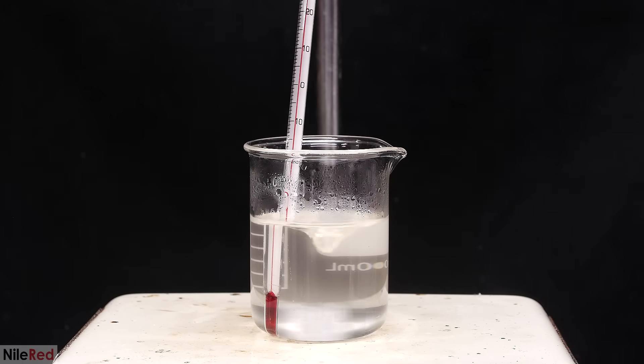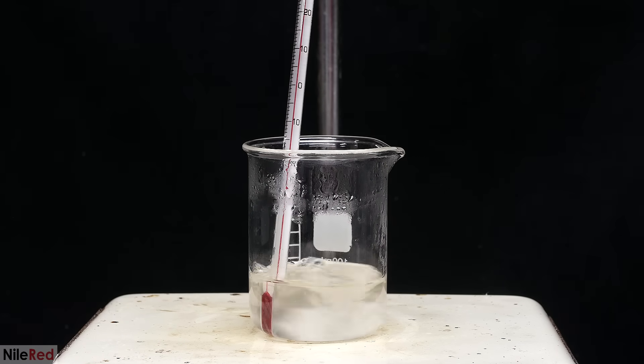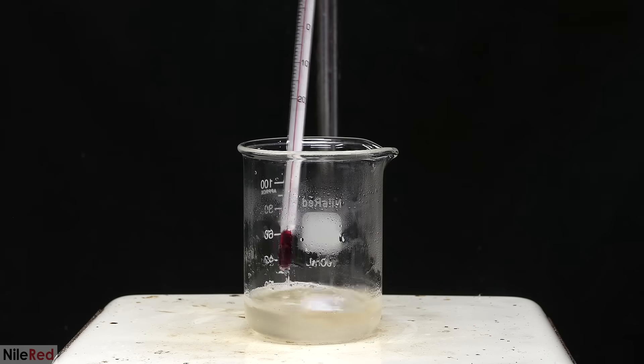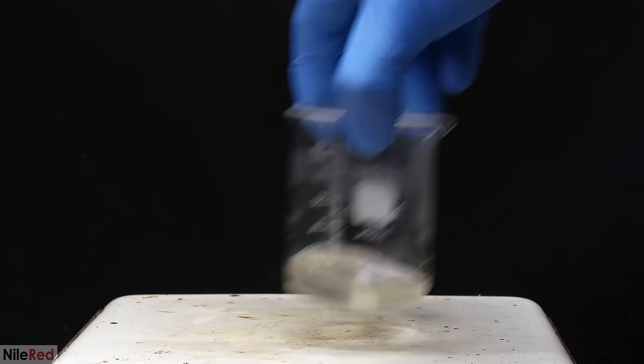When it got to a volume of about 80 milliliters, I transferred it to a smaller beaker and then continued to boil things off. I reached the 90°C mark when the volume was around 20 milliliters, and I took it off the hot plate.